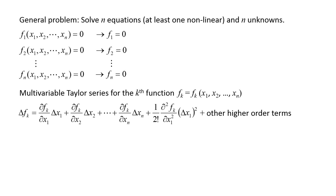There are also an infinite number of other terms that have higher order derivatives multiplied by delta x1, delta x2, and so on, raised to higher powers. We will make a linear approximation that delta x1 through delta xn are so small that the higher order terms are negligible. Just like in the Newton-Raphson and secant methods, the deltas refer to the difference between the current values of the variables, denoted by the subscript i, and the next estimate of the variables, denoted by the subscript i plus 1.